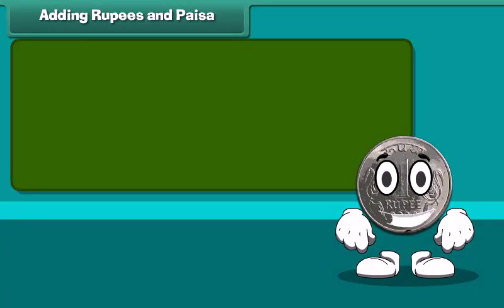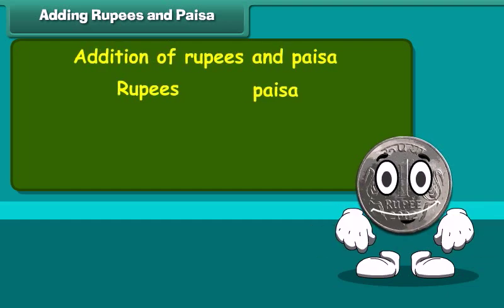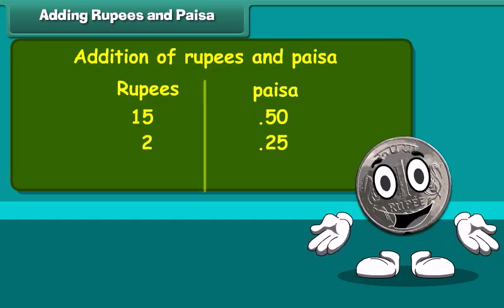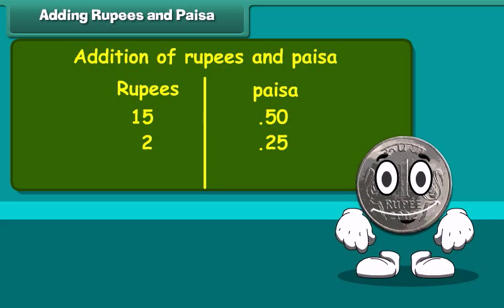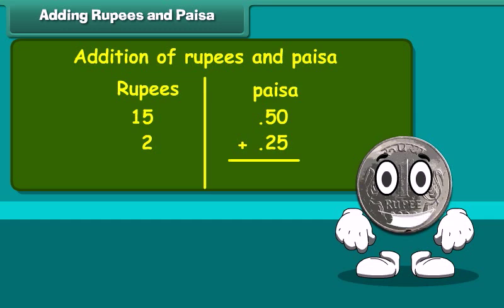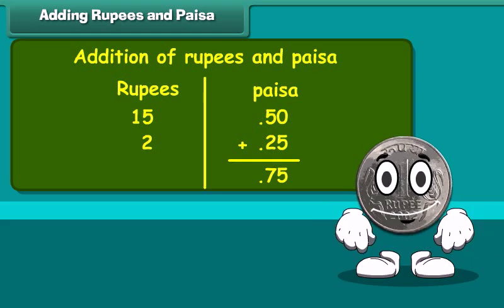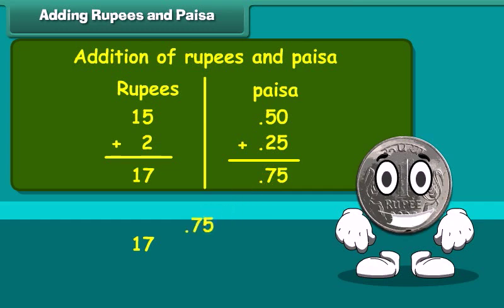Let us learn addition of rupees and paisa. Add 15 rupees 50 paisa and 2 rupees 25 paisa. Write the amount in two separate columns of rupees and paisa. First, add numbers in the paisa column: 50 plus 25 paisa is equal to 75 paisa. Now add numbers in rupees: 15 plus 2 is 17. Therefore, the sum is 17 rupees and 75 paisa.